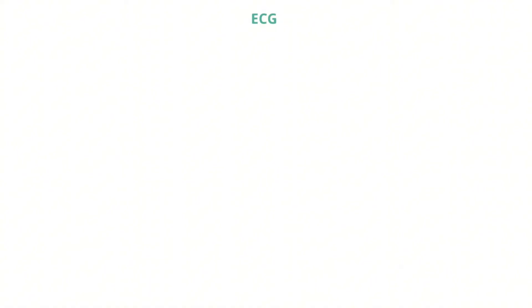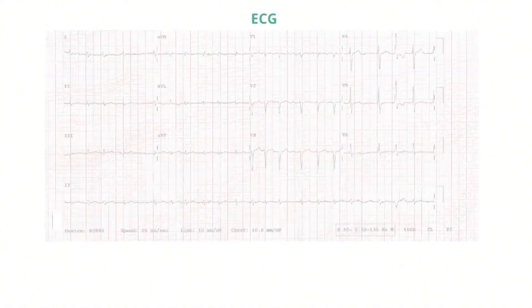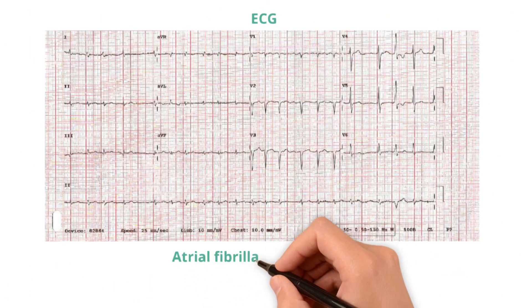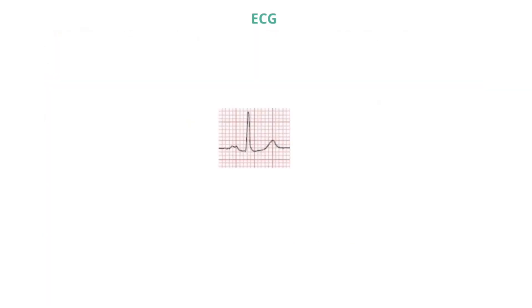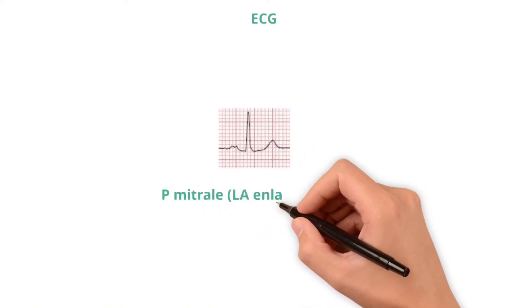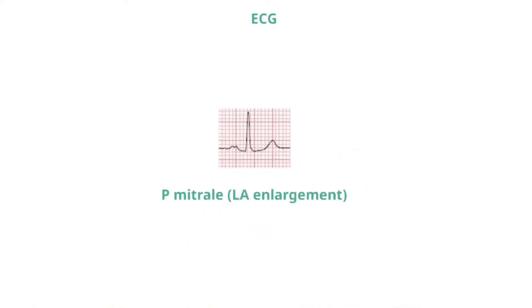Let's look at the ECG of a patient with mitral regurgitation. This patient has atrial fibrillation, which is common in those with mitral regurgitation. Next, this ECG shows sinus rhythm, but the P waves are bifid and have a prolonged duration, referred to as P mitrale, which indicates left atrial dilatation.